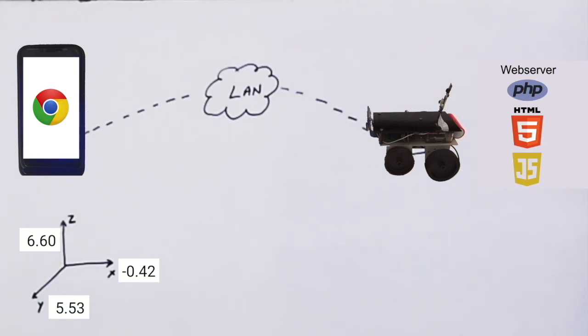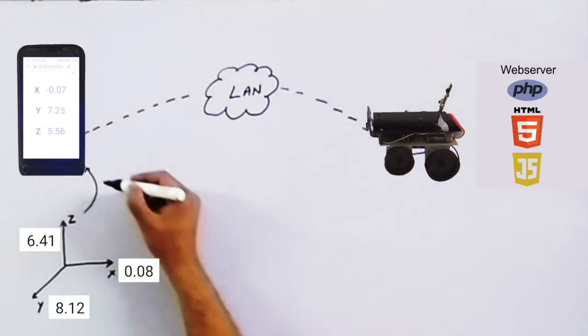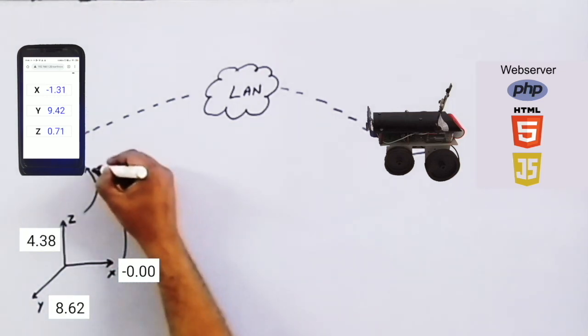When the web page is loaded, the JavaScript code embedded in it swings into action and starts capturing the smartphone's accelerometer data.